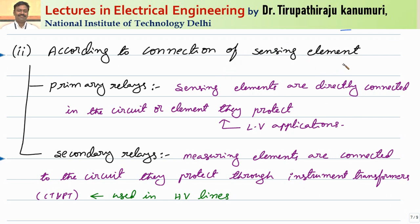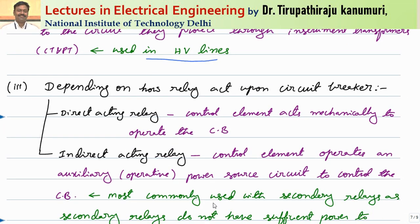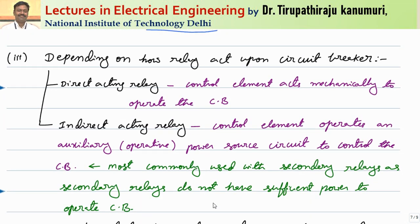Now, according to the connection of the sensing element, there are two types: primary relay or secondary relay. In a primary relay, the sensing element is directly connected to the element being protected — used in low voltage applications where the relay can be connected directly to the supply. In a secondary relay, it is connected through instrument transformers, used for high voltage applications to provide isolation and reduce current magnitude.